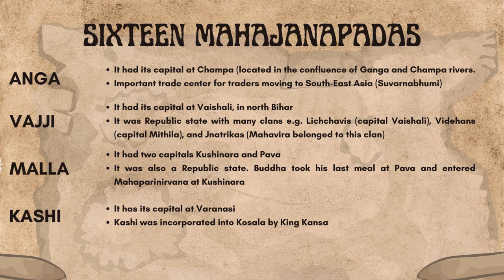Next comes the Vajji Kingdom with Vaishali as capital in North Bihar. It was a republic state with many clans — for example, the Licchavis with capital at Vaishali, the Videhas with capital at Mithila, and the Jnatrikas. Mahavira belonged to the Jnatrika clan.